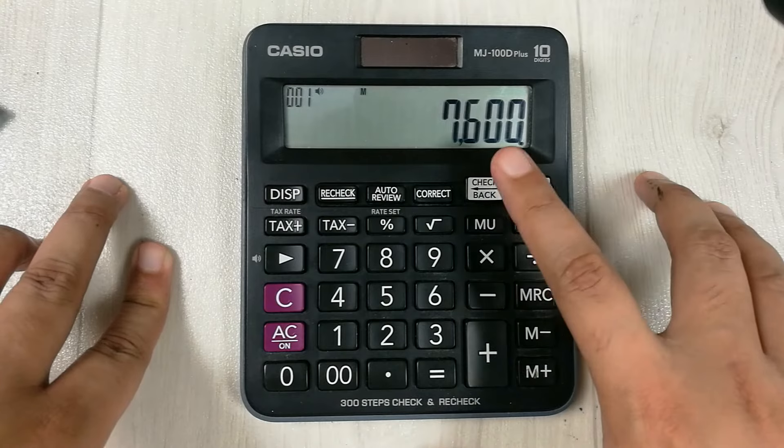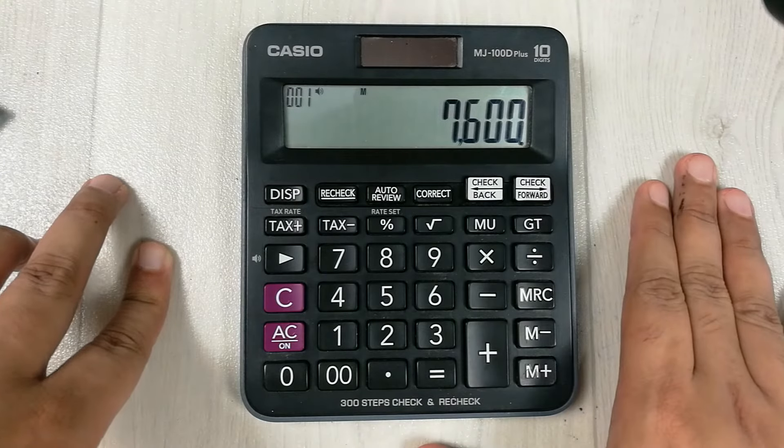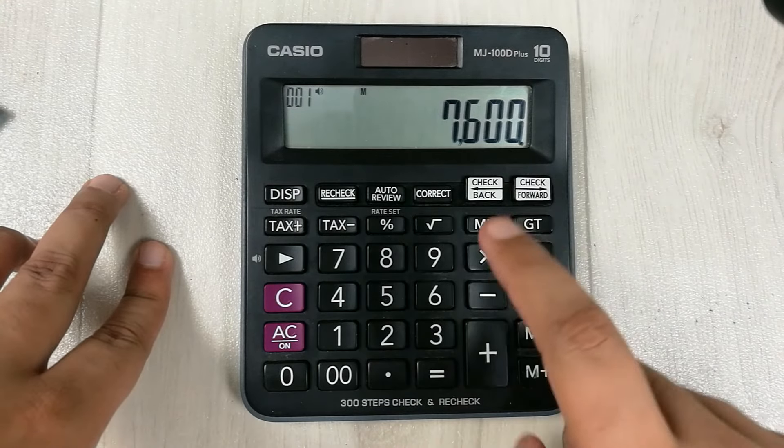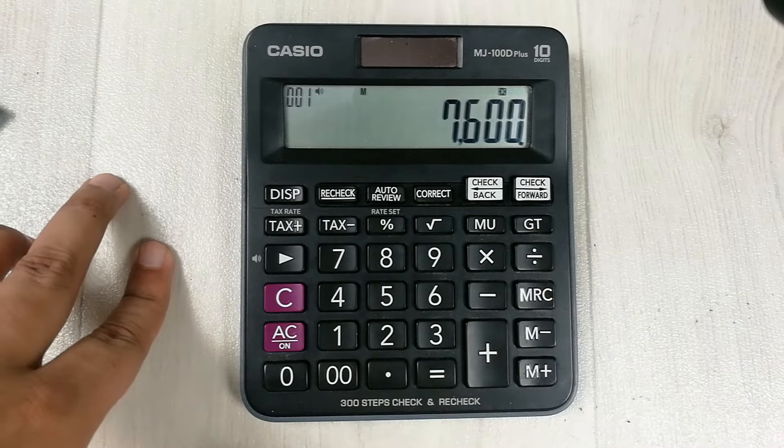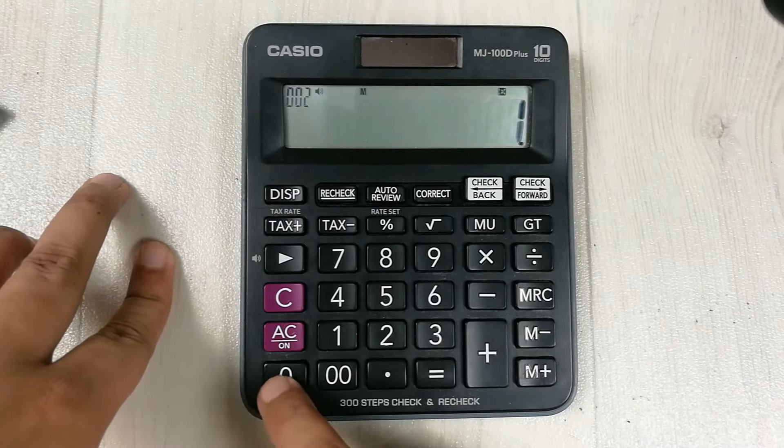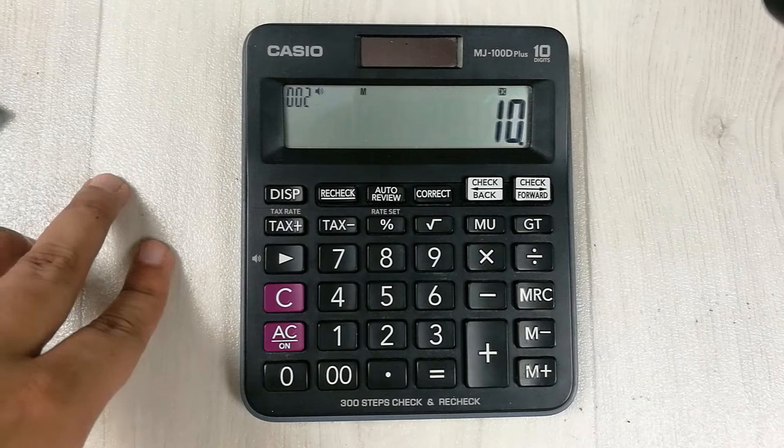7600, we press the multiply button, and then we enter 10. And then we press this percentage button.